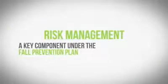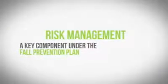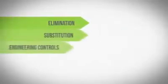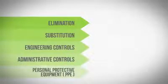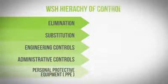A key component of the FPP is risk management. Under risk management, appropriate control methods have to be implemented in preference to first eliminate, if not reduce the risk of falling from heights. This principle is also known as the WSH Hierarchy of Control.